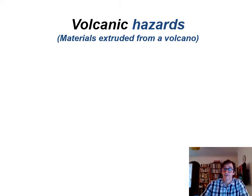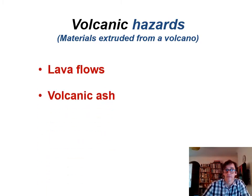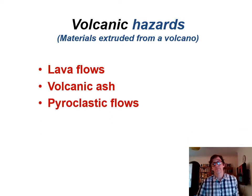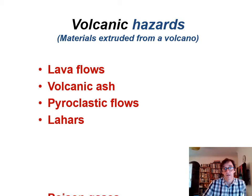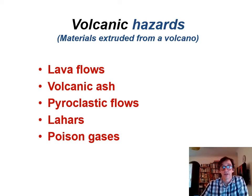Volcanic hazards — the ones we're going to go through — are the materials extruded from a volcano. There are five: lava flows, volcanic ash, pyroclastic flows, lahars (an Indonesian word meaning volcanic mud flow), and poisonous gases. Those are the five we're going to deal with in this lecture.